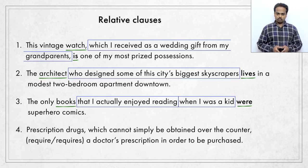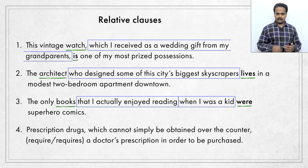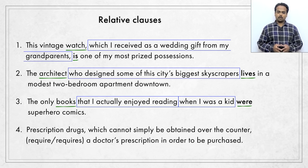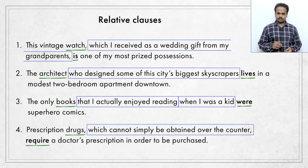Prescription drugs which cannot simply be obtained over the counter require or requires a doctor's prescription in order to be purchased. The sentence means that there are certain medicines that if you want to buy them, you have to get a doctor's prescription. Over the counter means going to the store and buying something just like that — you cannot do that with prescription drugs. The relative clause is which cannot simply be obtained over the counter, and that clause gives information about prescription drugs. That's a plural noun, so we don't add S to the verb. Prescription drugs, which cannot simply be obtained over the counter, require a doctor's prescription in order to be purchased.